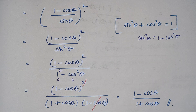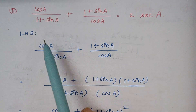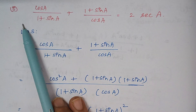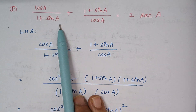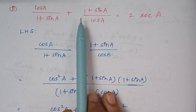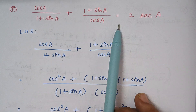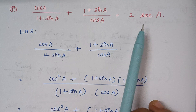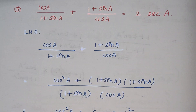This problem gets over, we will move on to the next one. This is the second part of problem number 5: cos a by 1 plus sin a, plus 1 plus sin a by cos a, is equal to 2 secant a.